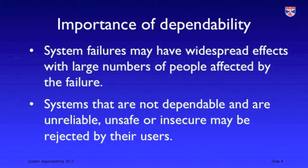Dependability is important because system failures have widespread effects. They may affect hundreds, thousands, or tens of thousands of users. If a system is unreliable, unavailable, or generally undependable in some way, it will not be trusted by its users and they'll simply stop using it if they possibly can. If they can't, they will only use part of the system's capabilities to try and avoid the problems of undependability.